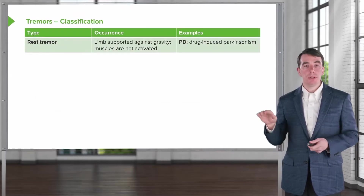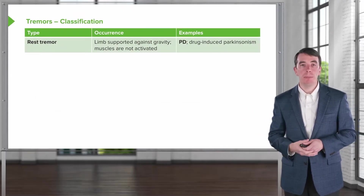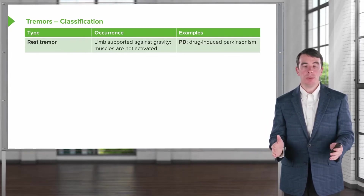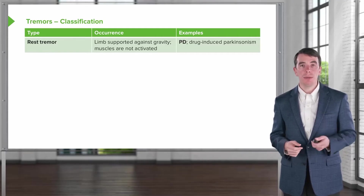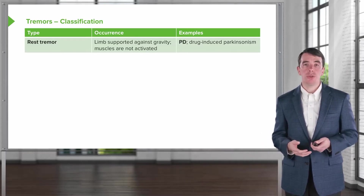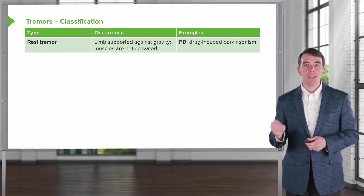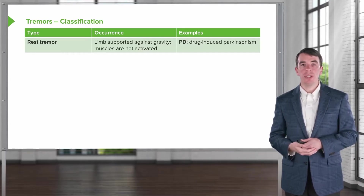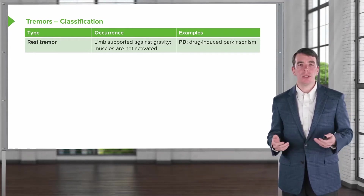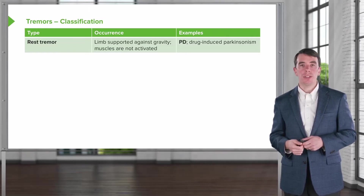When we think about tremor, there are several types to remember. The first is a rest tremor. This occurs when the limb is at rest — we often see it in the hands, feet, and sometimes the head. The limb should be supported against gravity when evaluating this, and the muscles should not be activated. The classic diagnosis we see with rest tremor is Parkinson's disease, but we can also see it with drug-induced Parkinsonism and some Parkinson's-plus syndromes.